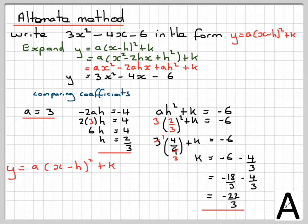Therefore, y will be equal to a, brackets, x minus h all squared plus k, which is 3, brackets, x minus 2 thirds squared minus 22 over 3. The same as before. So this is an alternative method, and it's a valid method as well.